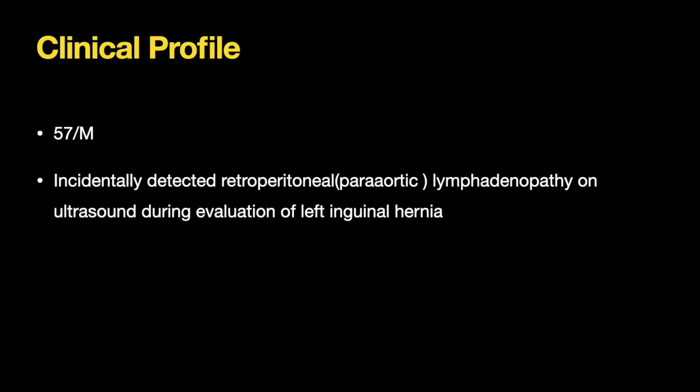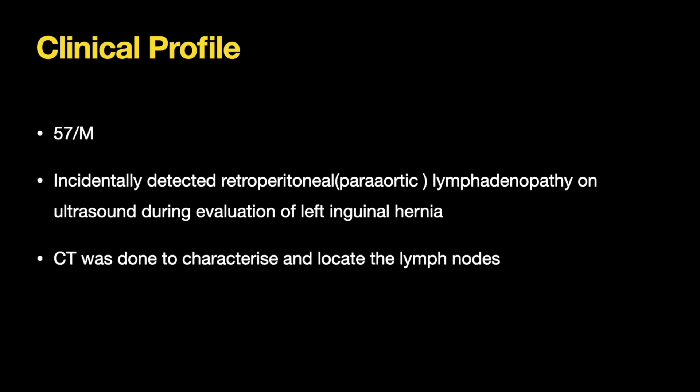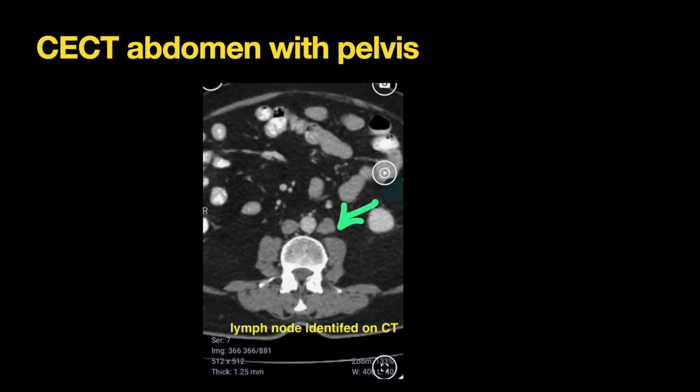He was a 57-year-old gentleman with incidentally detected retroperitoneal paraaortic lymphadenopathy on ultrasound during evaluation of left inguinal hernia. CT was done to characterize and locate the lymph nodes in relation to the key structures. There was no palpable lymphadenopathy elsewhere, negating the possibility of taking biopsy from peripheral nodes.